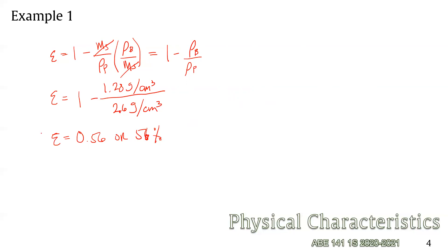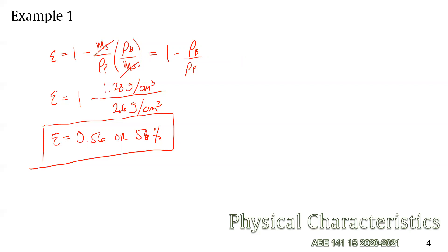That is the final answer. This means 56 percent of the volume of the sample consists of voids, and only 44 percent is solid material. This also means we can still compress the flour so that the porosity or voids could be reduced, resulting in less volume to transport, for example via cargo.